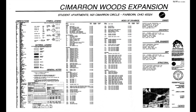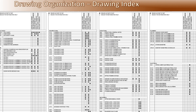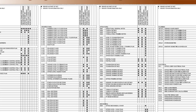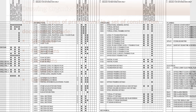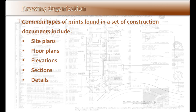This index can be found on the title page of the construction documents, along with the date each page has been issued or changed. The most common types of prints found in a set of construction documents are site plans, floor plans, elevations, sections, and details.